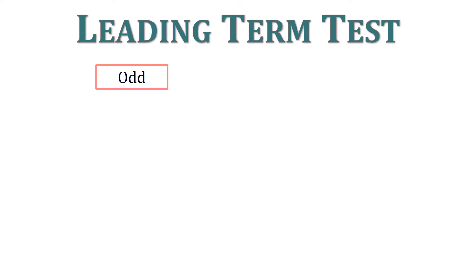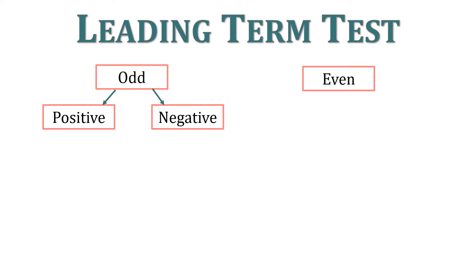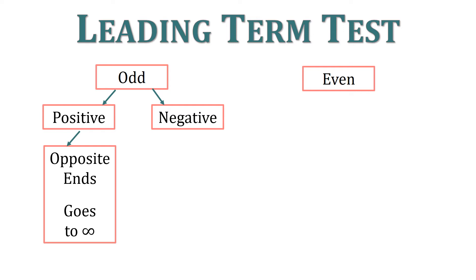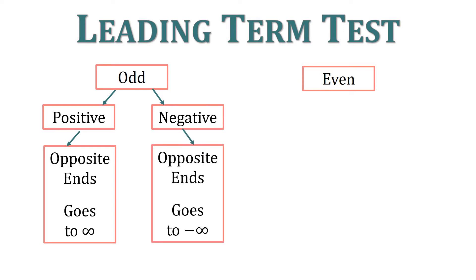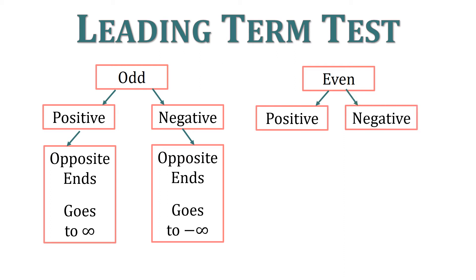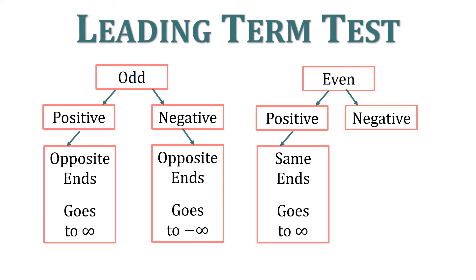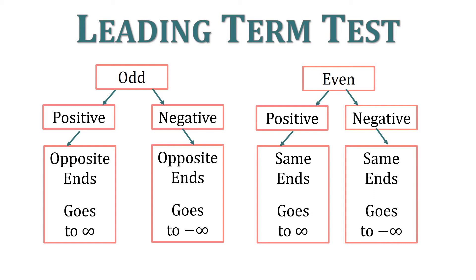Here's a flowchart to help us. First, determine if our function is odd or even. If it's odd, decide if it's positive or negative. If it's odd and positive, it has opposite ends going to positive infinity. If it's odd and negative, it has opposite ends going to negative infinity — the right side goes to negative infinity. If it's even and positive, both ends go to infinity. If it's even and negative, both ends go to negative infinity — they open down.